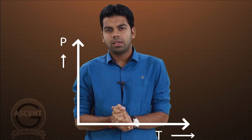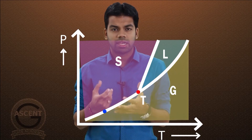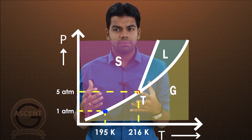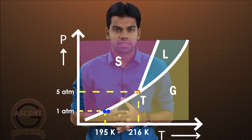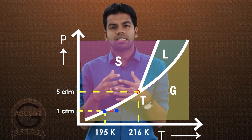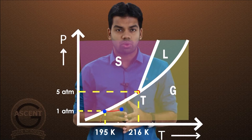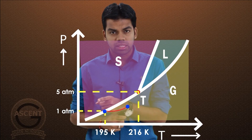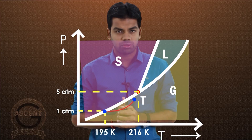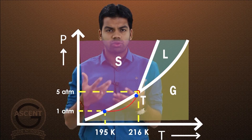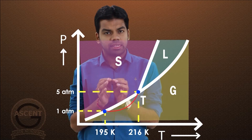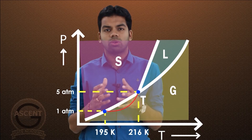Initially the dry ice is at minus 78°C (around 195 Kelvin). As sublimation occurs inside the bottle, temperature increases and pressure increases toward the triple point. The pressure, which started at 1 atmosphere, is now close to 5 atmosphere. The temperature, which started at 195 Kelvin, is now close to 216 Kelvin. At this point, the CO2 has reached the triple point where it exists in all three phases simultaneously: solid, liquid, and gas.